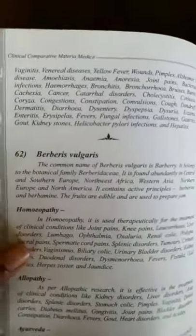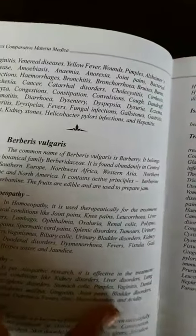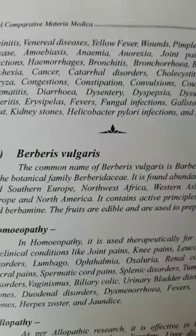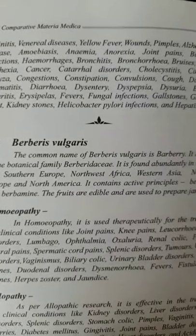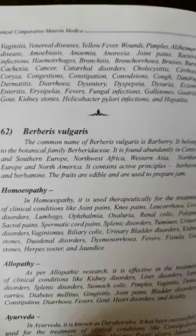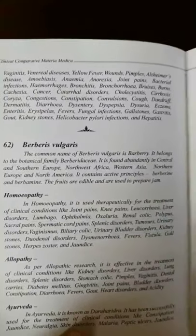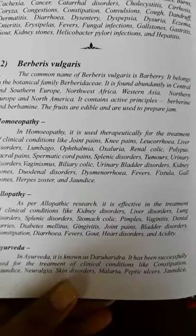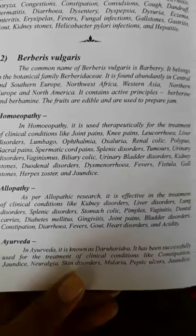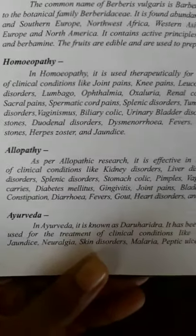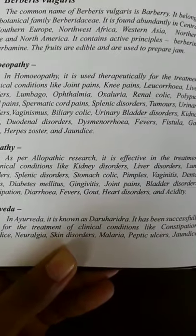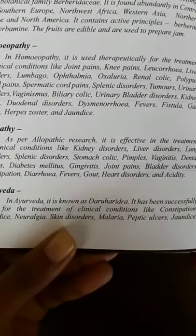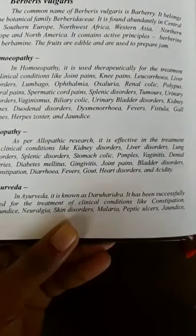Let's take a look at one of the commonly used medicines from homeopathy — Uberis vulgaris. Every homeopath knows its wide use in kidney pathologies, especially stones. In the book, its common name is given, its family, where it is found abundantly, and its active principles. In homeopathy, it's given in many cases including lumbago, renal colic, biliary colic, urinary bladder disorders, and kidney stones. In allopathy, it is also used for kidney disorders, bladder disorders, and some stomach and diarrhea conditions.